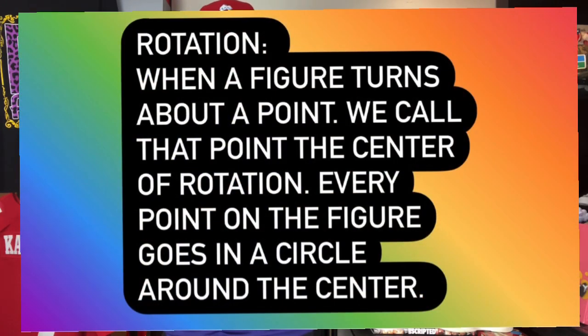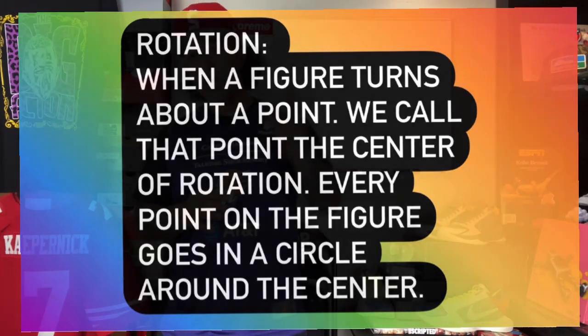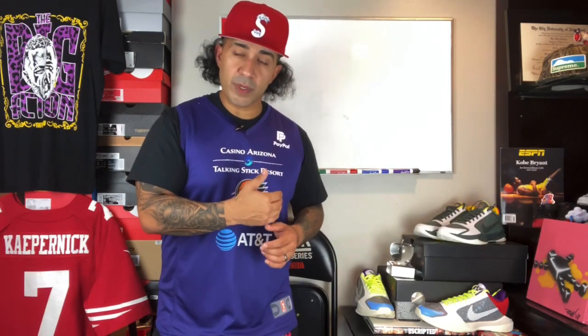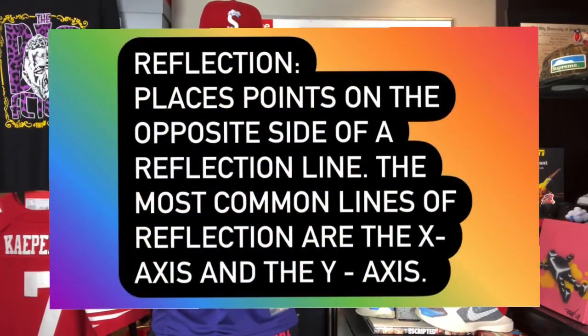The next transformation we're going to talk about is a rotation. A rotation is when a figure turns about a point, and we call that point the center of rotation. Every point on the figure goes in a circle around the center. Rotation can go clockwise — think of the face of a clock, and the way the hands move as time goes by, that is a clockwise movement. You can also have a rotation called counterclockwise, which is the opposite direction. That's counterclockwise.